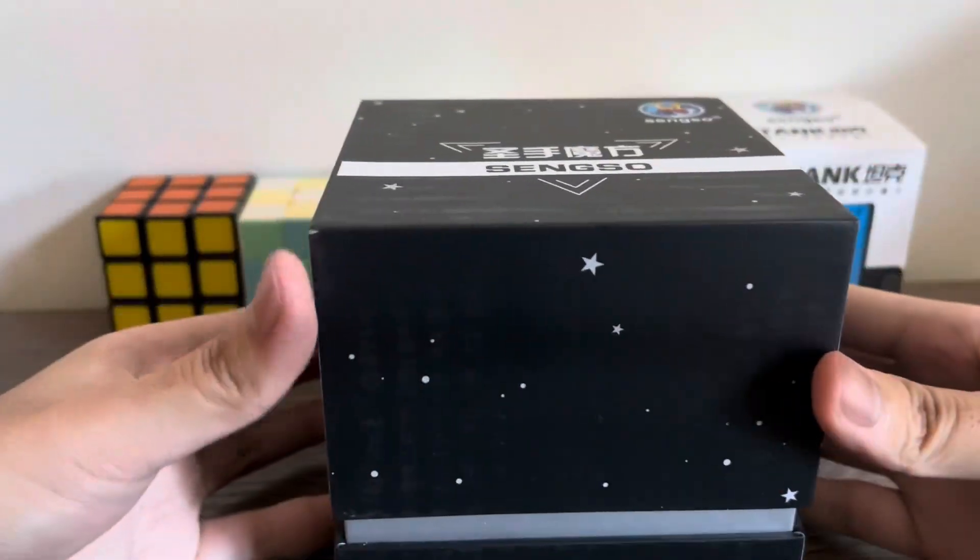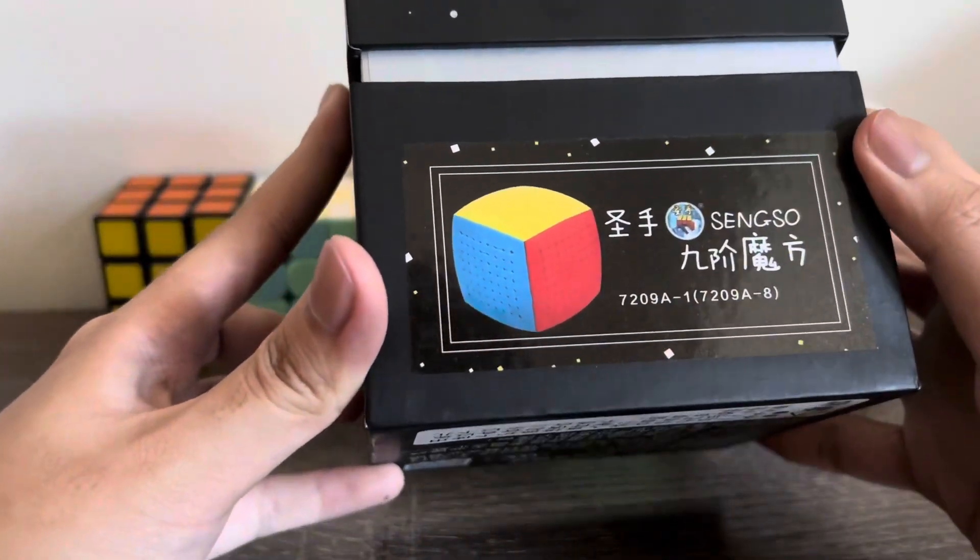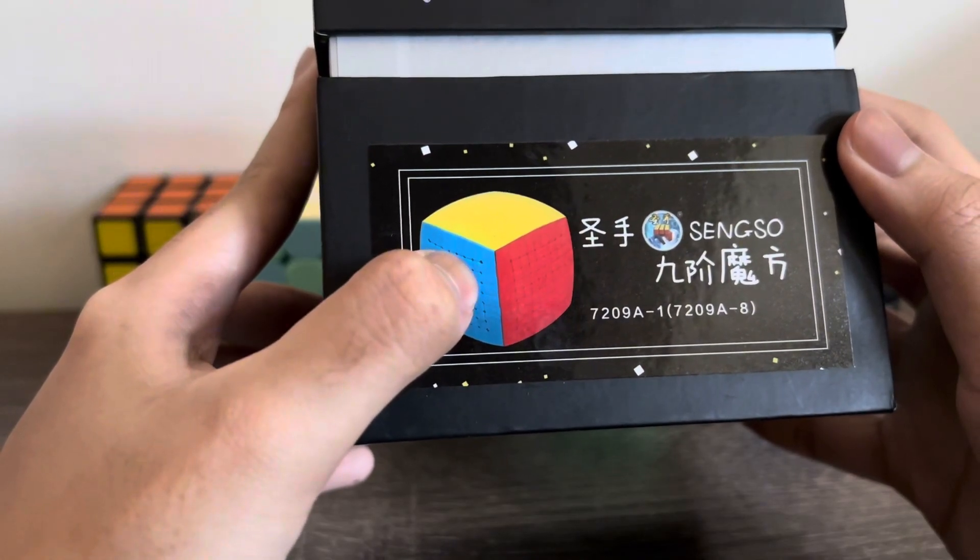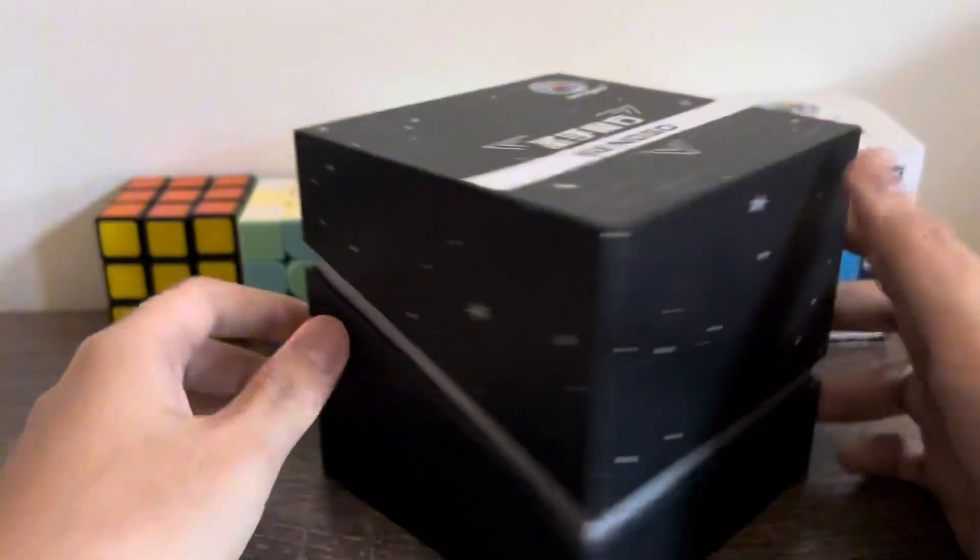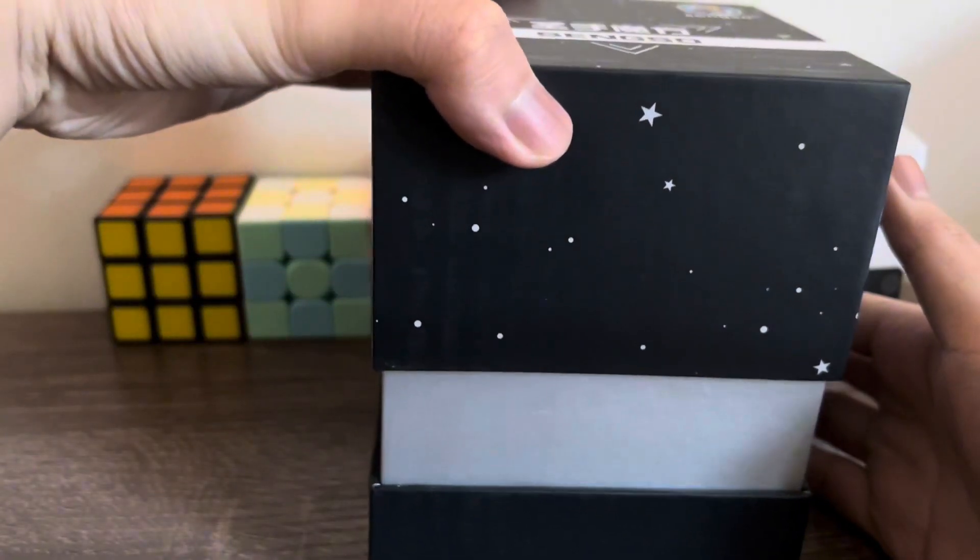So I'm going to unbox this pillowed cube. I actually counted it and it's 9 layers, so it's going to be a 9x9. It's time to open.